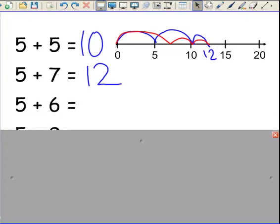The next problem is 5 plus 6. That's a near double. You might have a student suggest that 6 plus 6 is 12, so the answer would be 1 less. Model that one like this.